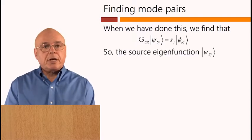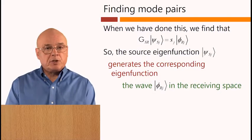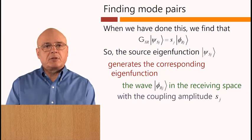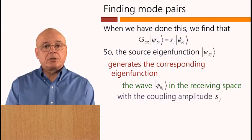Phi rj. So, the source eigenfunction generates the corresponding eigenfunction as the wave in the receiving space, with this coupling amplitude, Sj.